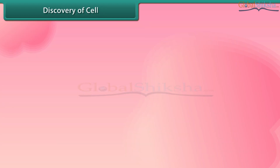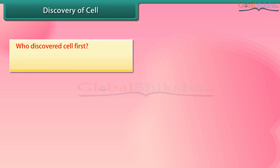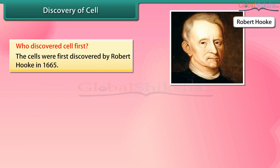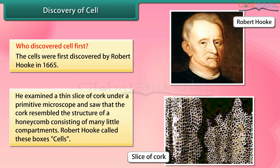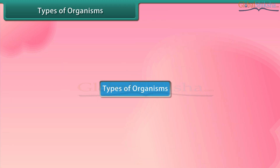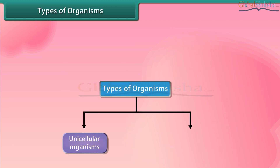All these structures are similar to each other. Discovery of cell: The cells were first discovered by Robert Hooke in 1665. He examined a thin slice of cork under a primitive microscope and saw that the cork resembled the structure of a honeycomb consisting of many little compartments. Robert Hooke called these boxes cells.